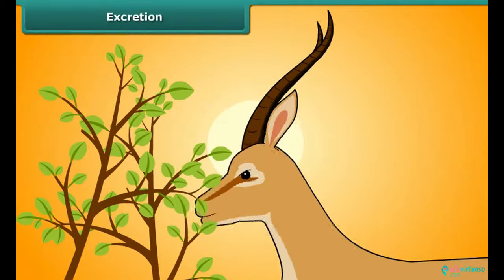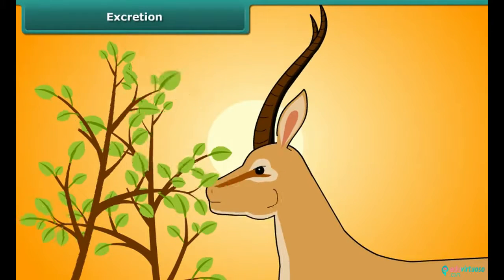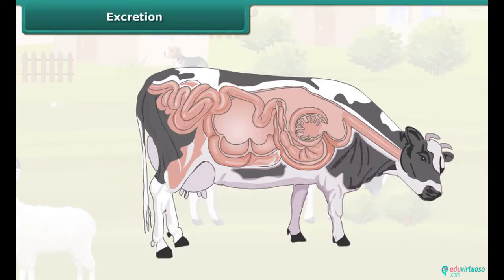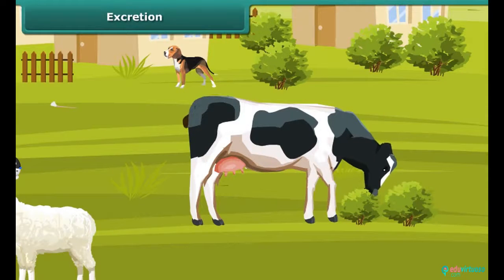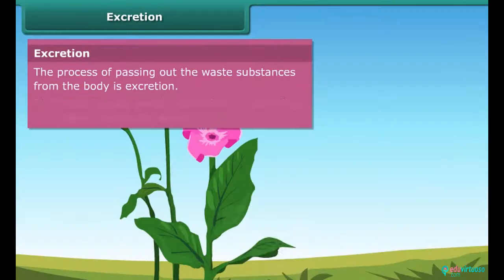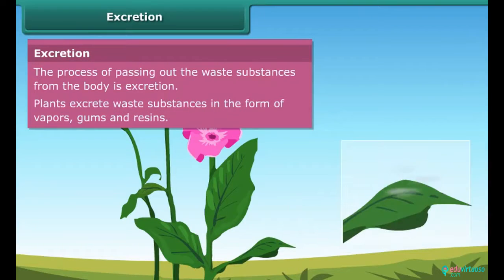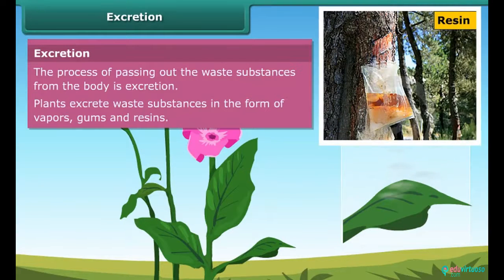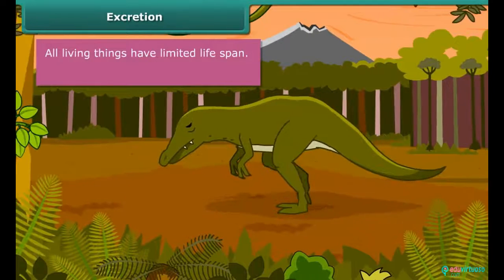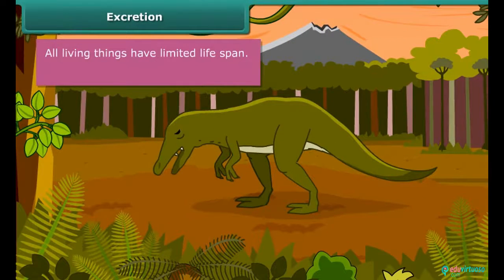Animals require food for growth and development. However, during the process of digestion, many waste materials are produced in the body which do not provide any nourishment. Therefore, they are excreted out from the body — the process of passing out waste substances from the body is called excretion. Plants excrete waste substances in the form of vapors, gums, and resins.